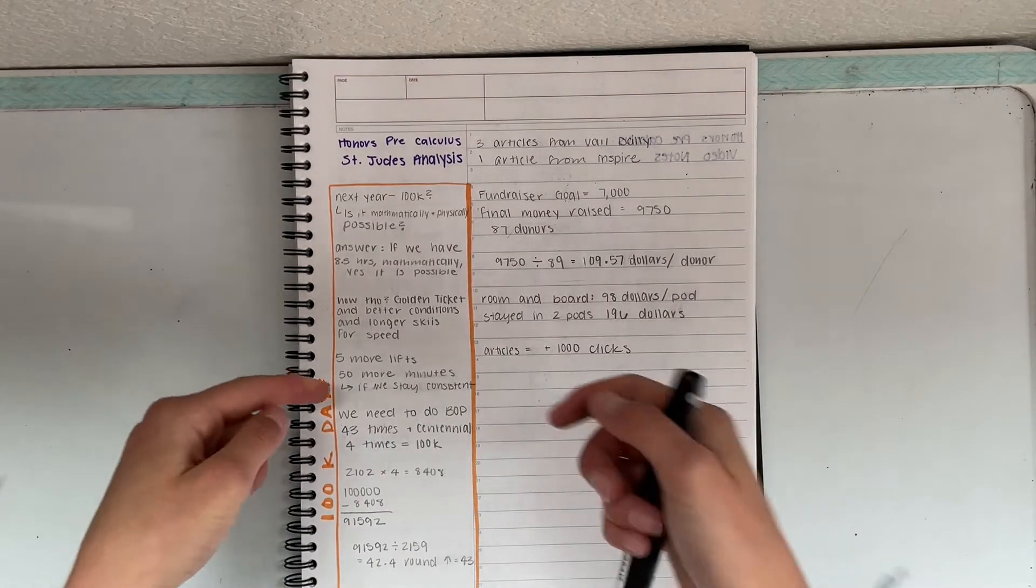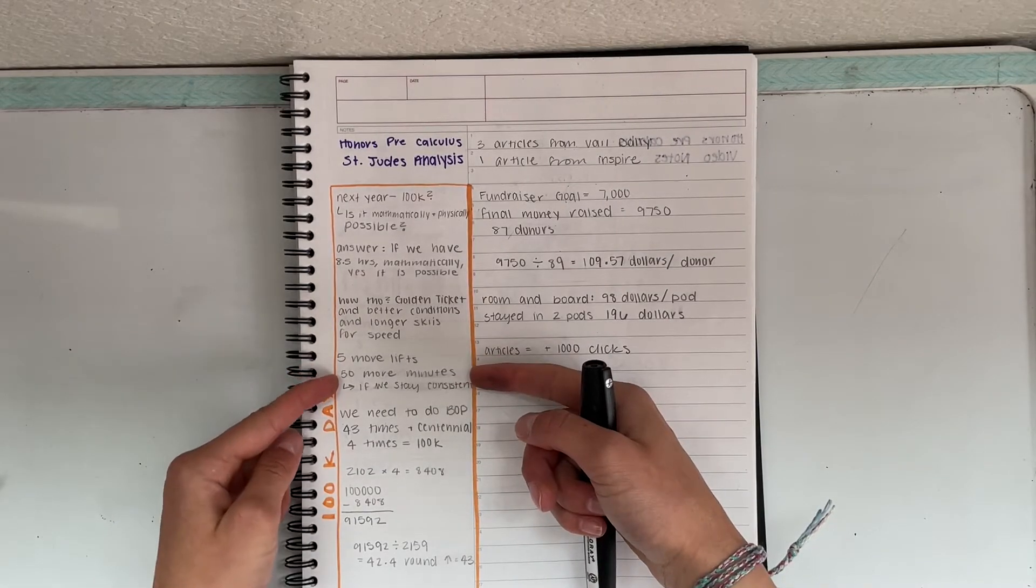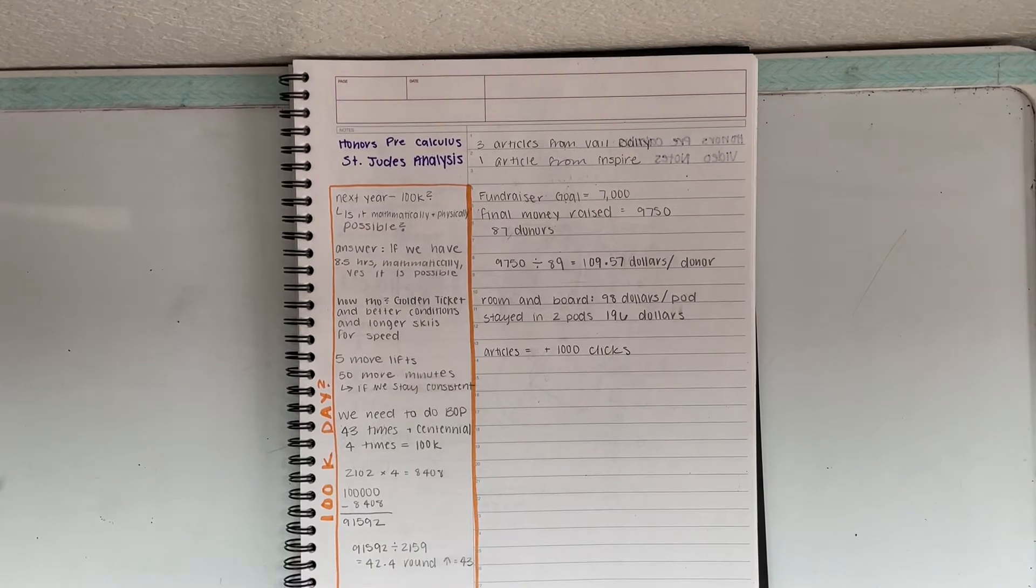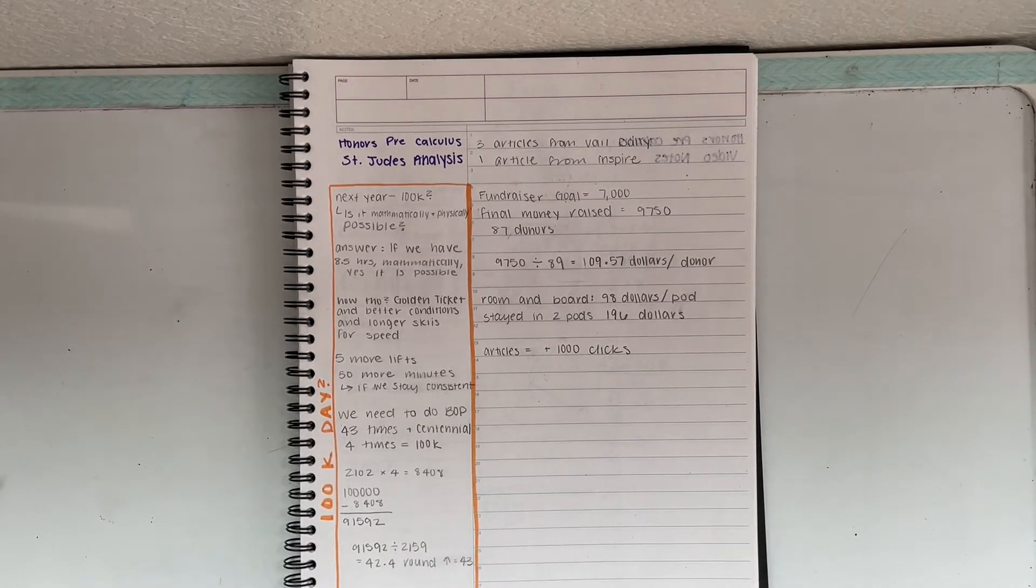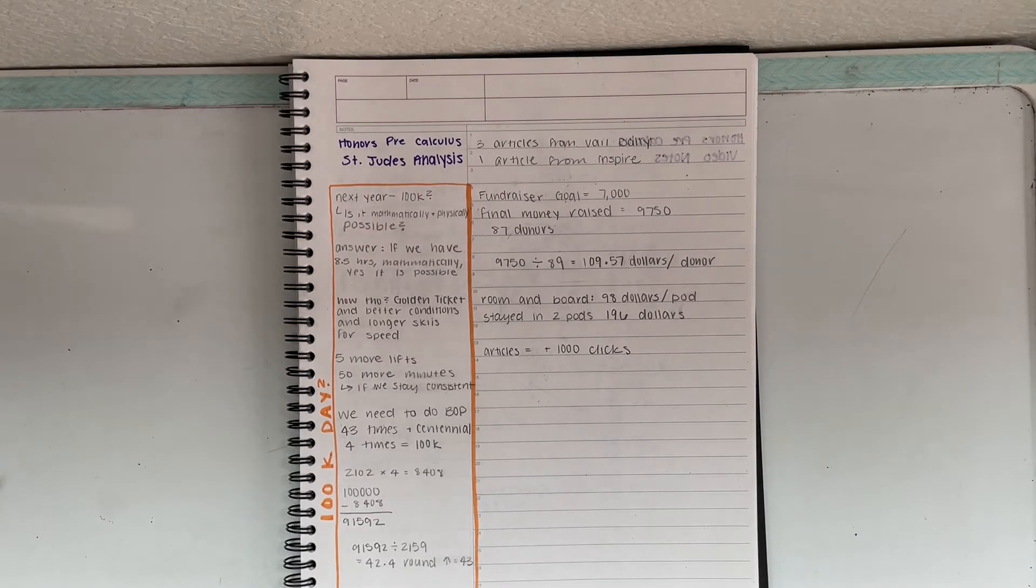But physically that isn't really possible because you don't have that much time skiing. So you need five more lifts, which is 50 more minutes. If we stay consistent, that is key because when you're skiing this much, then it's not everything is just going up linearly. There might be a time when all of a sudden, your progression isn't as constant and it starts to dip because you get slower.